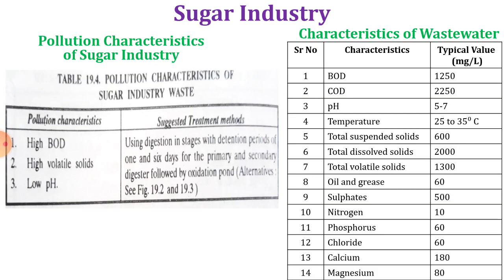All the wastewater generated from these sources has pollution characteristics of high BOD, high volatile solids, and low pH. The sugar industry wastewater has typical parameters including BOD, COD, pH, temperature, TSS, TDS, TVS (total volatile solids), oil and grease, sulfates, nitrogen, phosphorus, chloride, calcium, and magnesium.